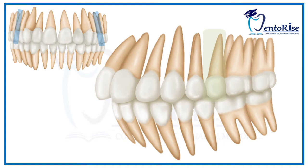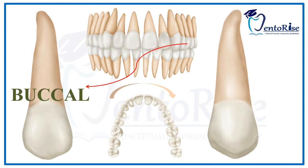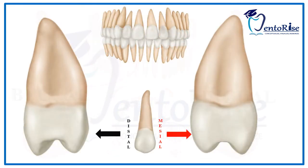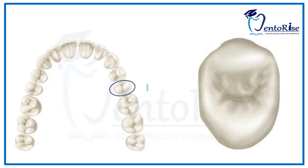the right permanent maxillary second premolar is numbered as 15 and the left permanent maxillary second premolar is numbered as 25. Now let's start with the dental anatomy of permanent maxillary second premolar from five aspects: the buccal aspect, the lingual aspect, the mesial aspect, the distal aspect, and the occlusal aspect.